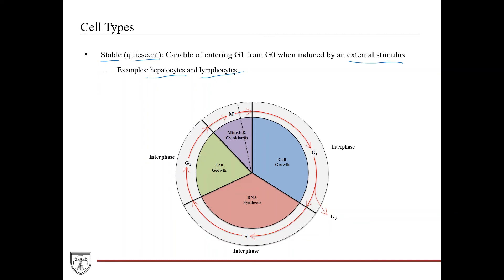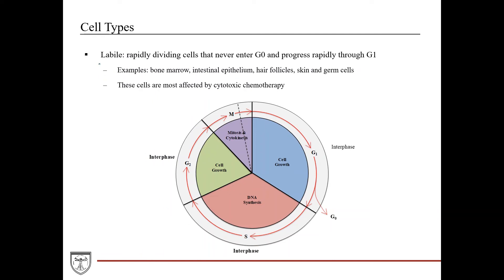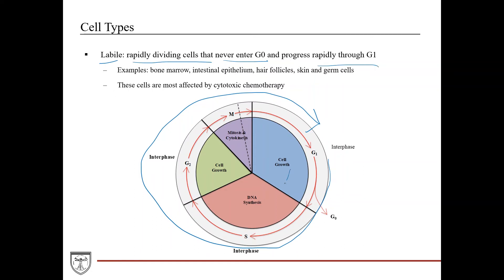Labile cells are rapidly dividing cells that never really enter G0—they constantly cycle and progress rapidly through G1 to get to DNA replication. Examples include bone marrow, which constantly creates new red and white blood cells; intestinal epithelium, which turns over rapidly due to contact with dietary substances; hair follicles; and skin, which is constantly regenerating due to environmental damage such as sunlight.